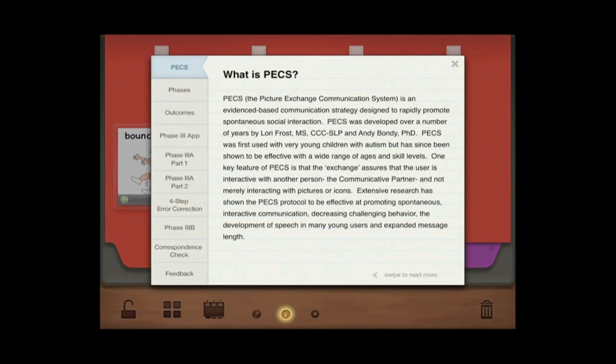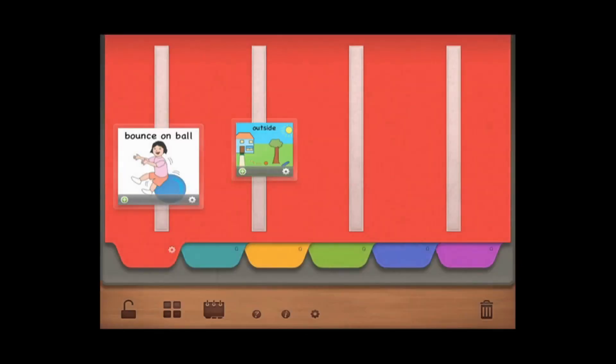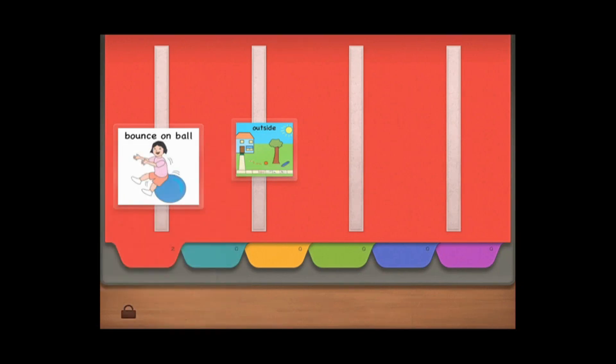You can easily turn the vocal feedback off during a correspondence check, and turn it back on when the correspondence check is completed. To use the PECS Phase 3 app across the day, you can put pictures relevant to a particular activity on different tabs within your student's book.